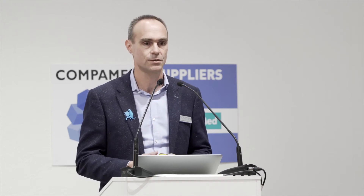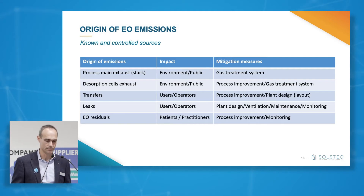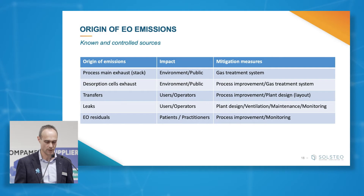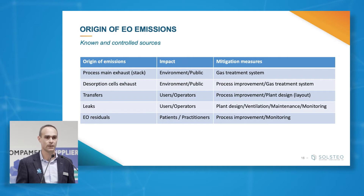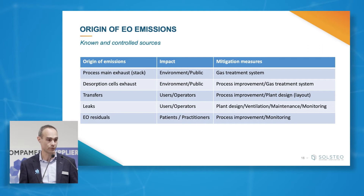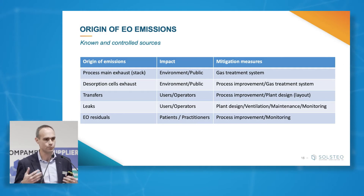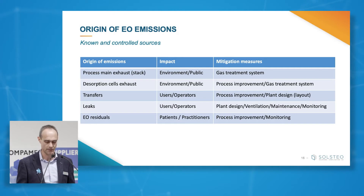Then we have secondary sources of emission, like the exhaust of the desorption cells. These also have an impact on the environment and the general public, similar to the main stack of the plant. They also need to be treated by a gas treatment system, or can also be addressed by process improvements — so we are not only going to treat with the gas treatment system, but we can also improve the process to limit the EO emissions.